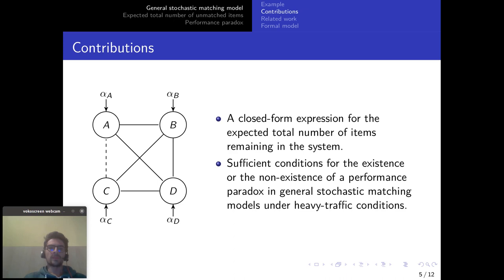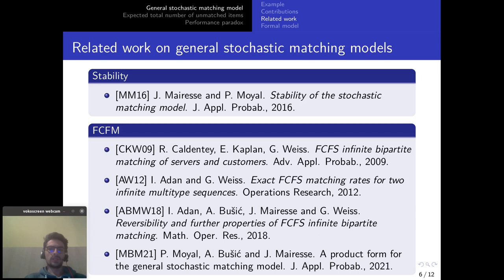So this general stochastic matching model first appeared in the paper of Jean-Mérez and Pascal-Mérez called Stability of the Stochastic Matching Model. And later on it was proved by Pascal-Mérez, Anna-Buzic and Jean-Mérez that this model has a stationary distribution which has a product form and that will be very useful for our results.